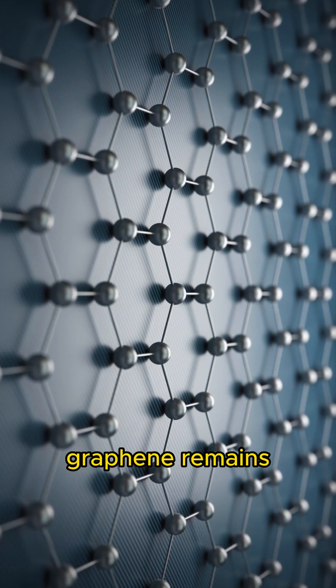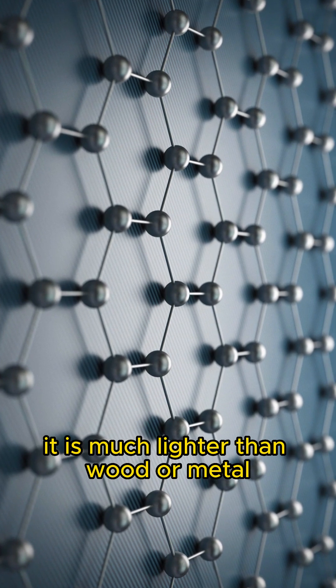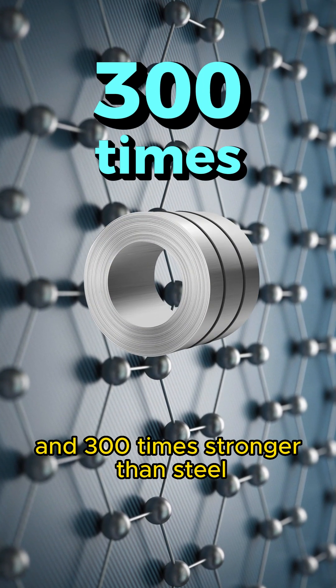To this day, graphene remains the thinnest and lightest material on Earth. It is much lighter than wood or metal and 300 times stronger than steel.